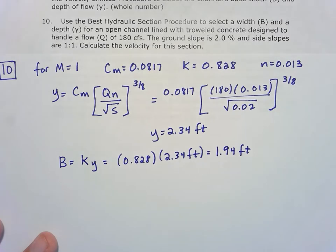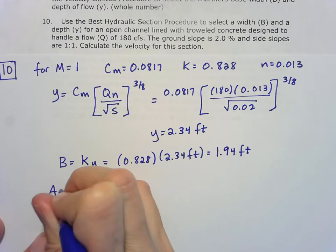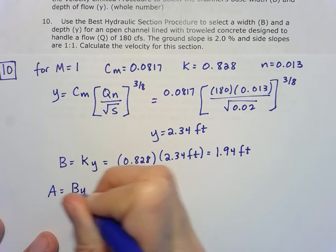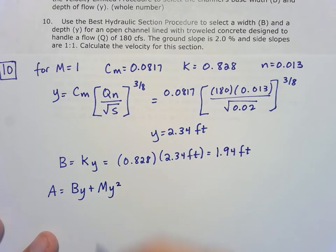And once we know B and Y, we can find the area. Okay, so we know for an area of a trapezoid, it's going to be that base times the depth plus that side slope, horizontal component of the slope times Y squared. So in this case,